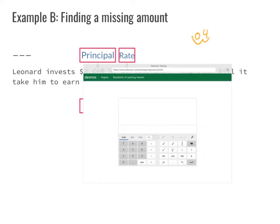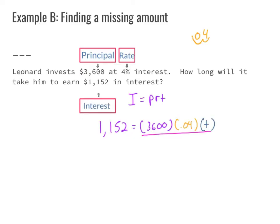Using our calculator, we multiply 3,600 × 0.04, which gives us 144. So we have 1,152 = 144T. We draw a line on both sides and divide both sides by 144. The 144s cancel, bringing down T, and 1,152 ÷ 144 = 8. So T = 8.